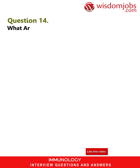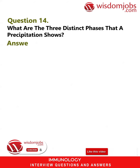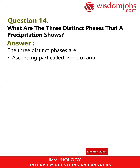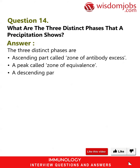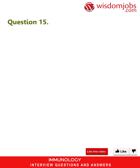Question 14: What are the three distinct phases that a precipitation reaction shows? Answer: The three distinct phases are: an ascending part called the zone of antibody excess, a peak called the zone of equivalence, and a descending part called the zone of antigen excess.